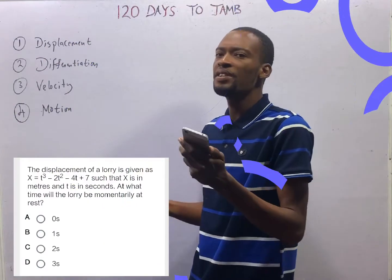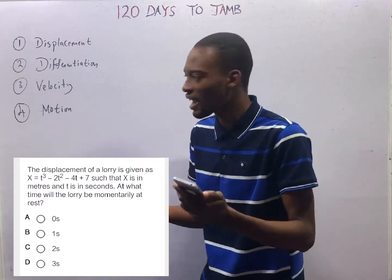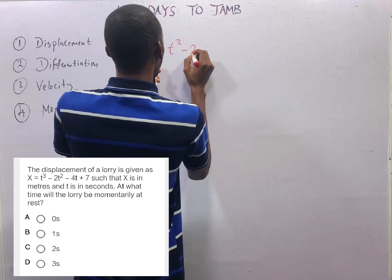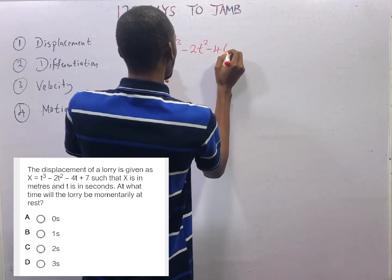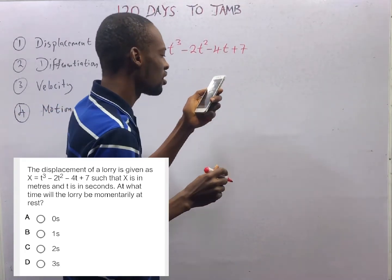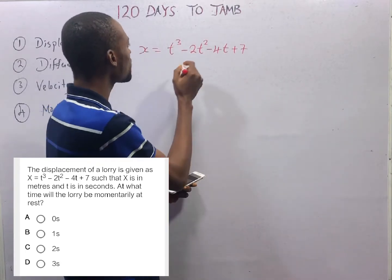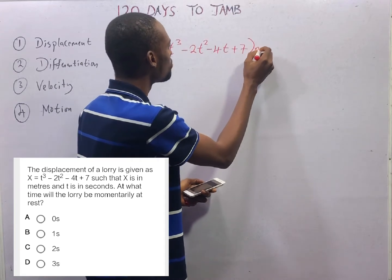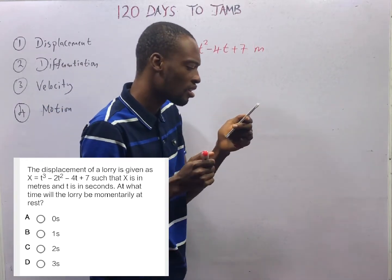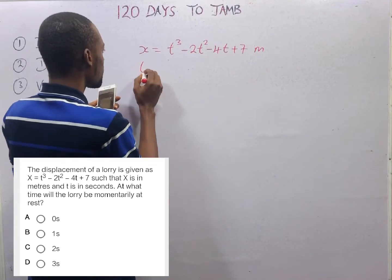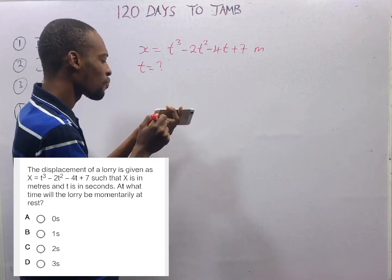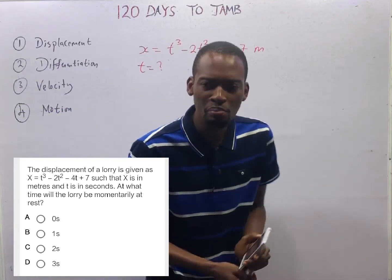It says the displacement of a lorry is given as: s = t³ − 2t² − 4t + 7, where s is in meters. At what time will the lorry be momentarily at rest?